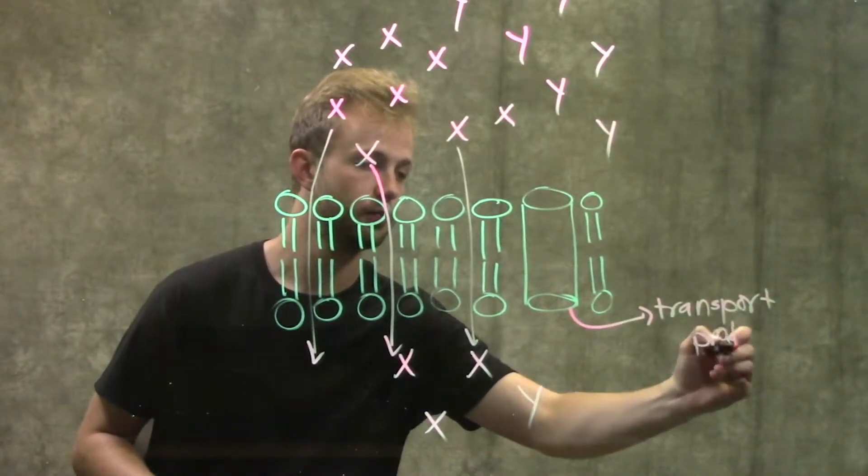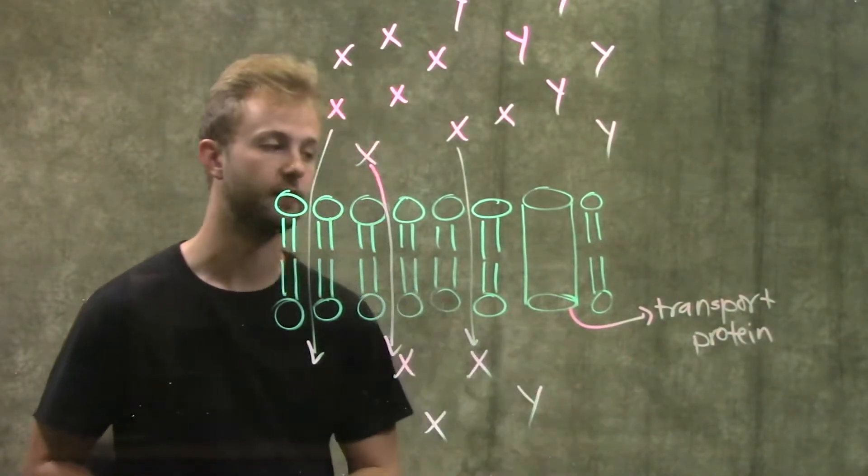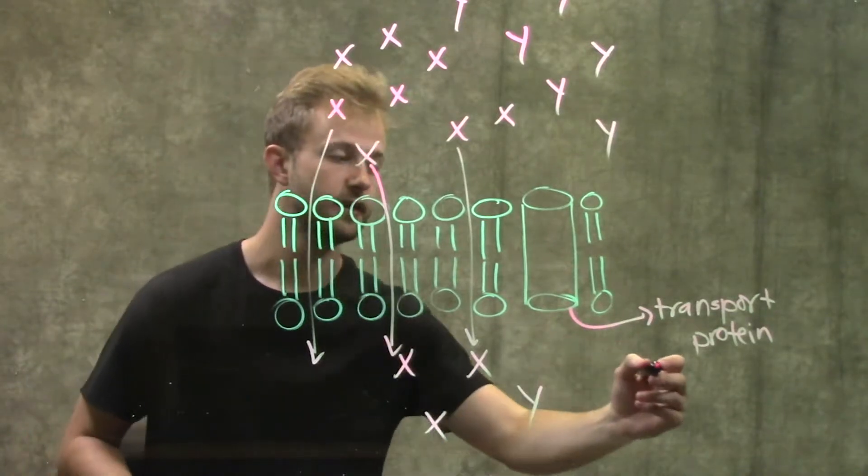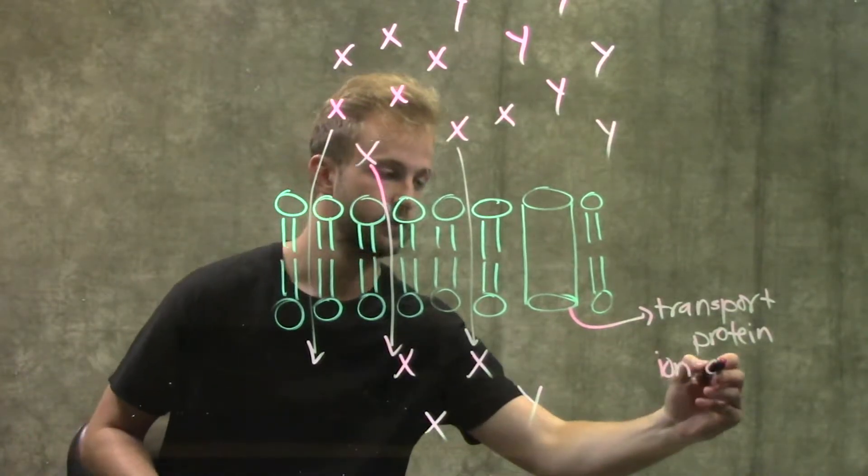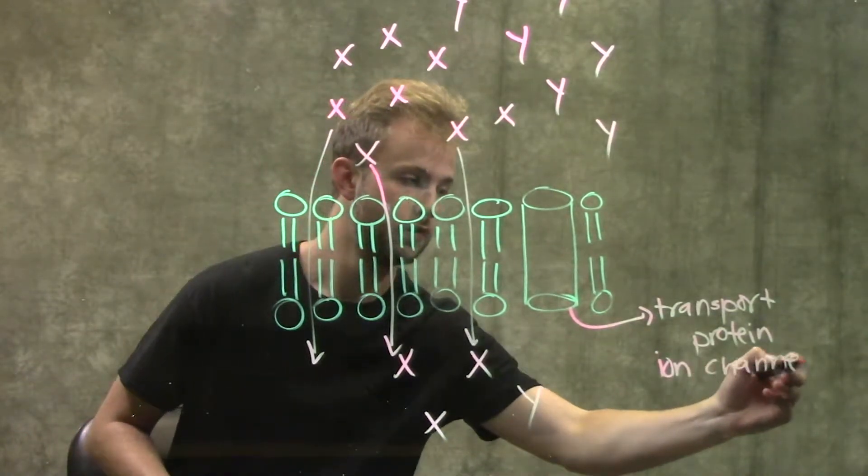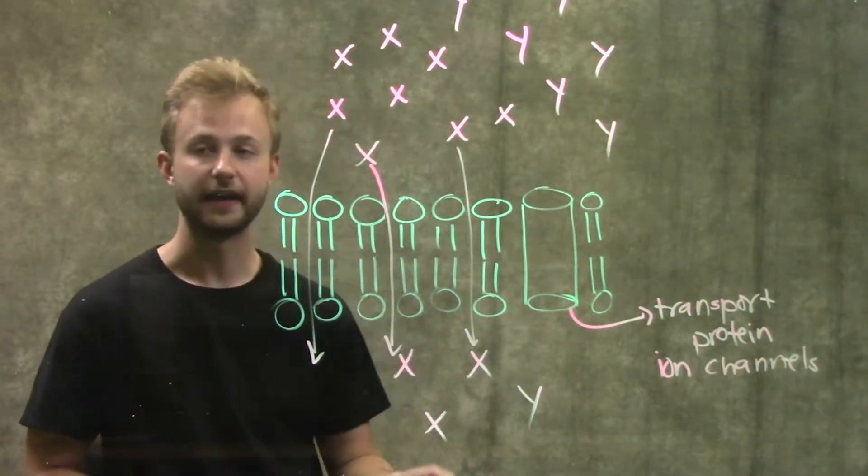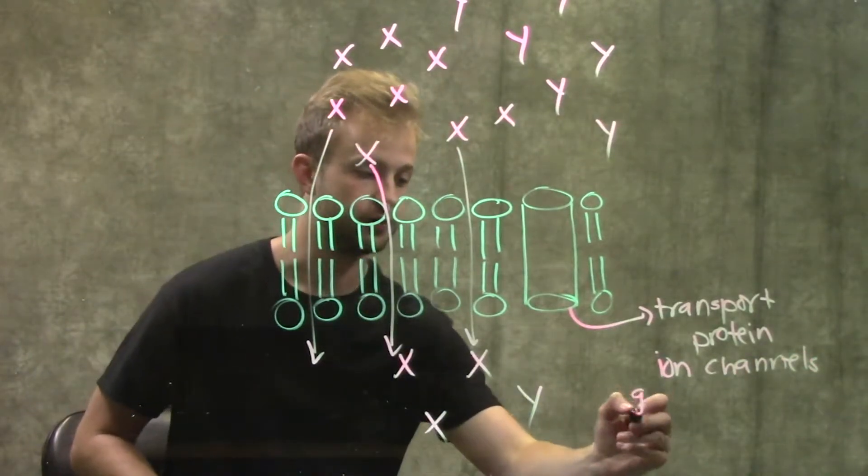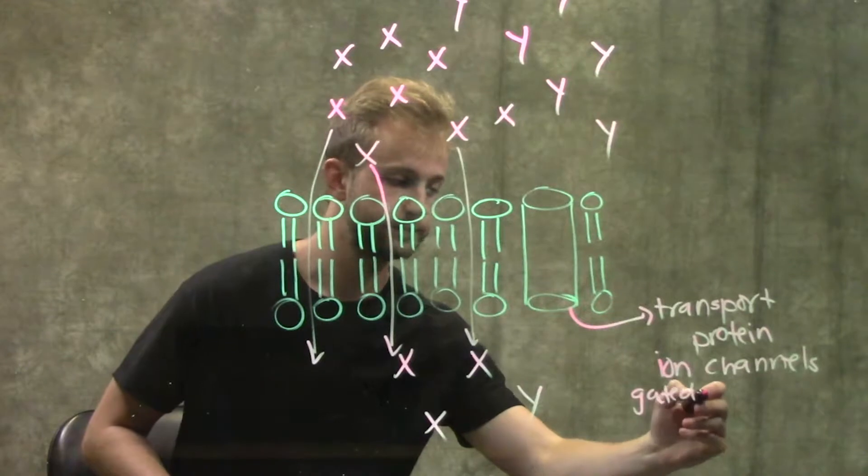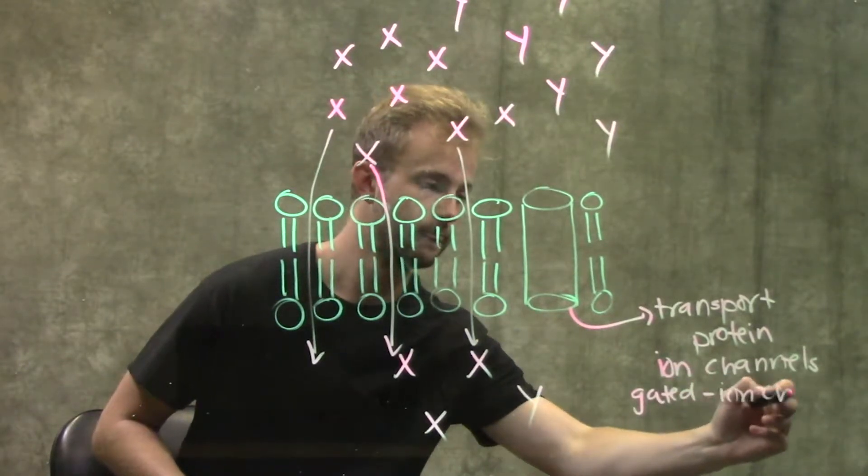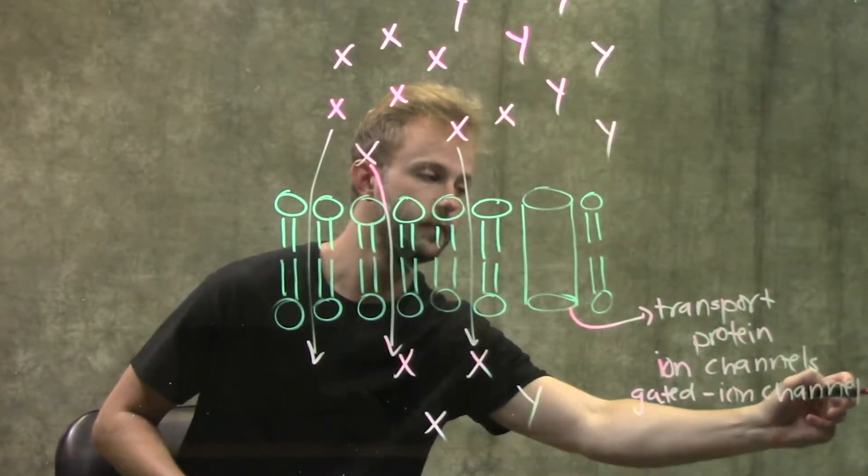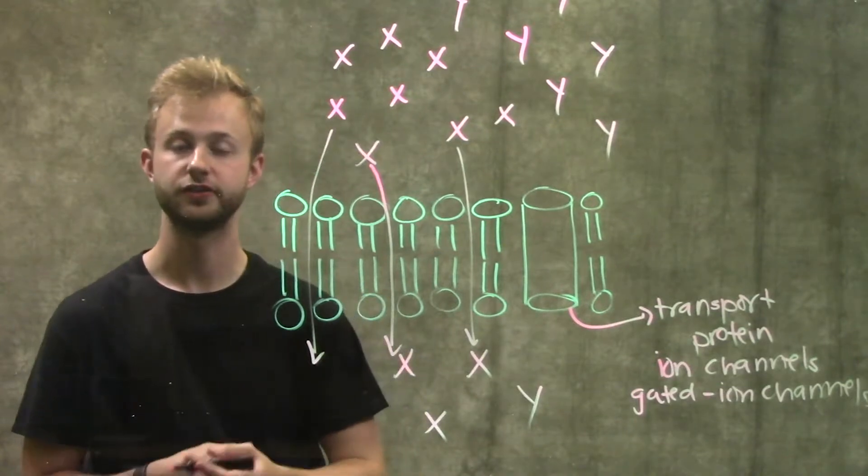A lot of the times, transport proteins in passive transport are going to be ion channels or gated ion channels. Gated ion channels are going to open and close in response to changes in the environment.